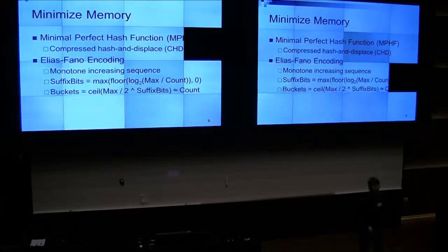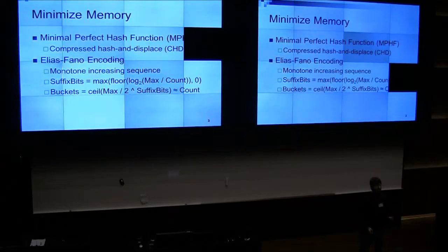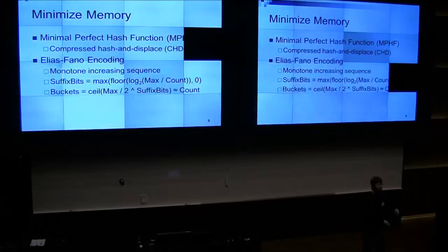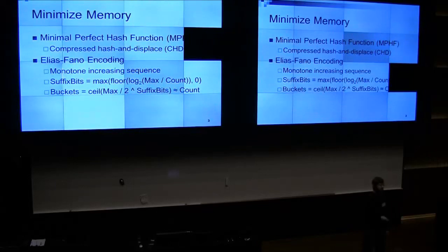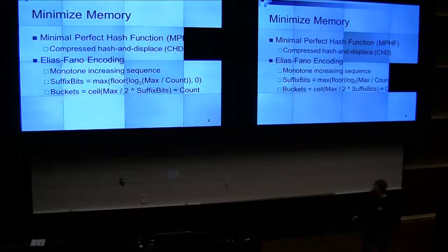So if you have zero, zero, then one — in the first bucket, which has a prefix of zero, you know the first two suffixes have a prefix of zero. Then zero, zero, one, zero — the third element would be in the second bucket, with a prefix of one, and so on.